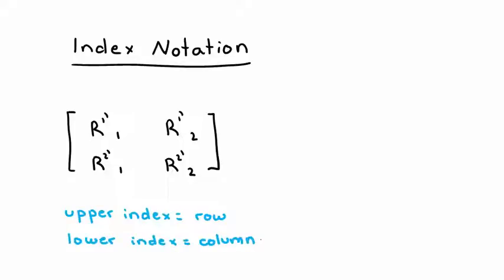Likewise, the lower index tells us which column the element belongs in. This way, an element labeled R1'1 belongs in row 1 column 1, and an element labeled R2'1 belongs in row 2 column 1, and so on.